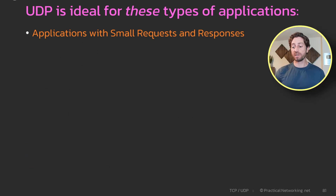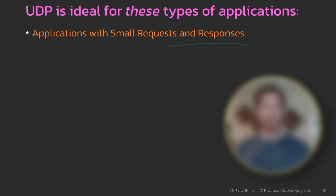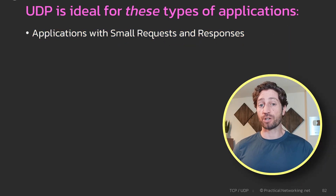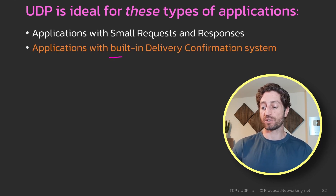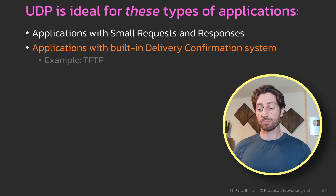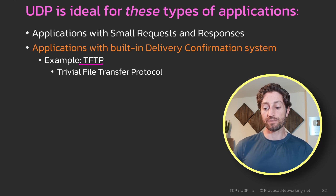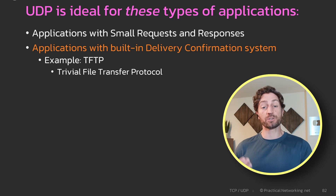That is the first type of application that really makes more sense on UDP than TCP — applications with small requests and small responses. The second type of application better suited for UDP than TCP is applications that have their own built-in delivery confirmation system. An example of this is TFTP — Trivial File Transfer Protocol — a protocol you can use to transfer files between different servers.